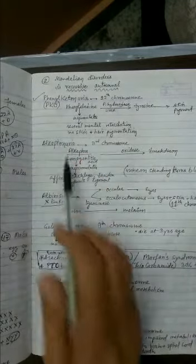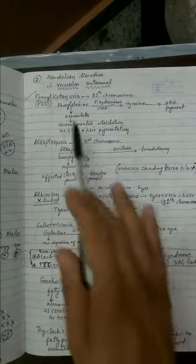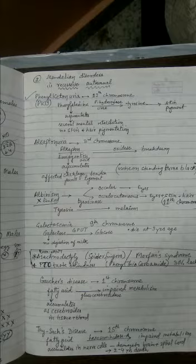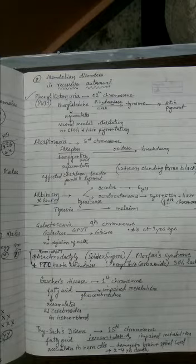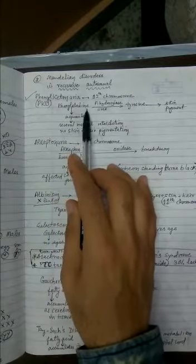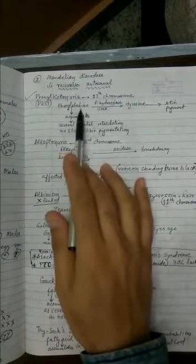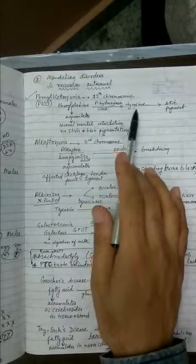Phenylketonuria is also written as PKU. We have already covered this in the pleiotropy concept. What exactly happens in phenylketonuria is a normal human body always prepares phenylalanine. Due to metabolism, this phenylalanine is supposed to be modified into tyrosine. Tyrosine and phenylalanine are amino acids. We have already learned these things in 11th class - essential amino acids.